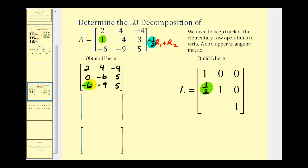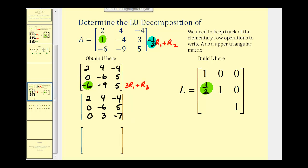To obtain a zero in row three, column one, let's replace row three with three times row one plus row three. The first two rows stay the same. For the third row: three times two plus negative six is zero; three times four plus negative nine is twelve plus negative nine, which is positive three; three times negative four is negative twelve, plus five is negative seven. Our multiplier is positive three, which helped us obtain a zero in row three, column one. So that position in the lower triangular matrix is the opposite of positive three, which is negative three.